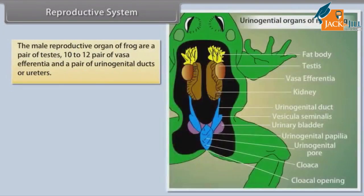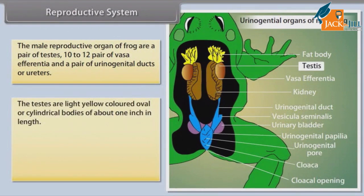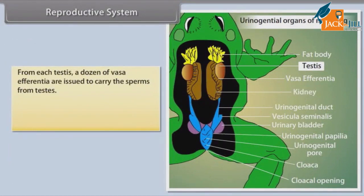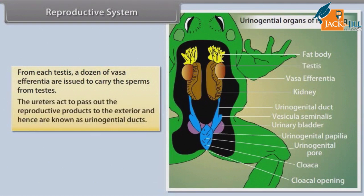Reproductive System: The male reproductive organs of frog are a pair of testes, 10 to 12 pairs of vasa efferentia, and a pair of urinogenital ducts or ureters. The testes are light yellow-colored, oval or cylindrical bodies about 1 inch in length, attached to the ventral surface of the kidney at the anterior end by a fold of peritoneum known as mesorchium. Dozens of vasa efferentia carry sperm from the testes. The ureters act to pass out reproductive products to the exterior and are hence known as urinogenital ducts.